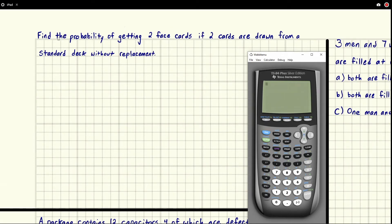Eric Burgess here. Find the probability of getting two face cards if two cards are drawn from a standard deck without replacement. We need to identify what the face cards are.